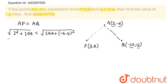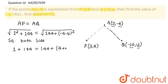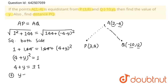Squaring both sides, we get 1 + 144 = 144 + (4 + y)². Simplifying, (4 + y)² = 1, so (4 + y) = ±1. Taking the plus sign, y = -3, and taking the minus sign, y = -5.